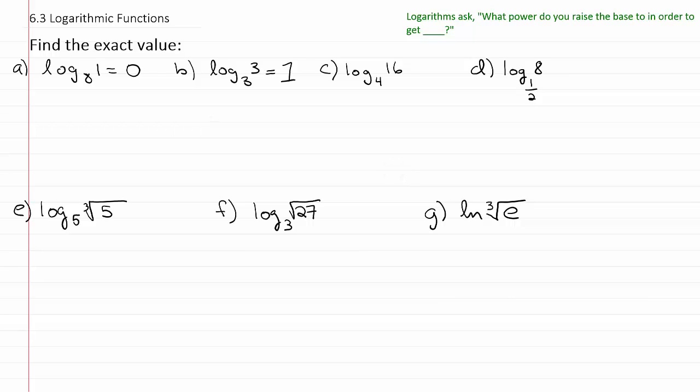Again, we have a general rule then that says, if you have log of, say, B, B here, the answer is always going to be 1. You should be saying, what power do you have to raise the base B to to end up with the answer of B?